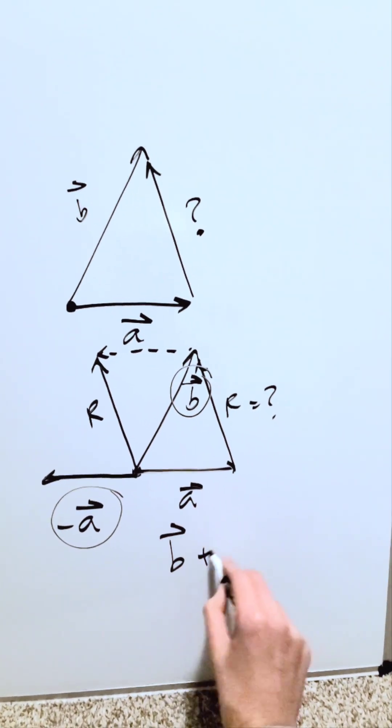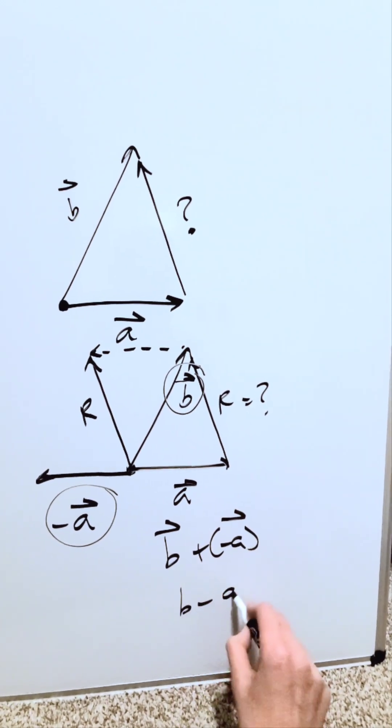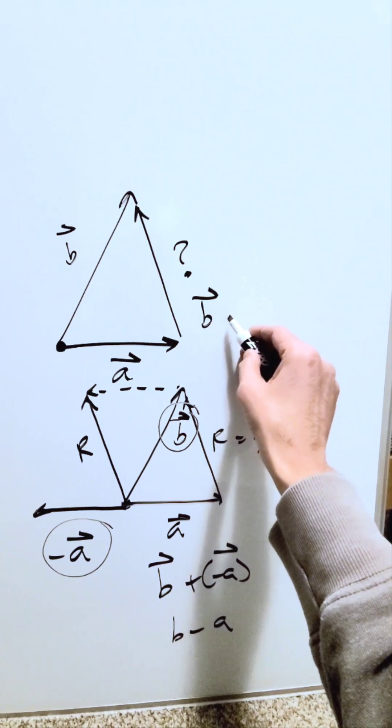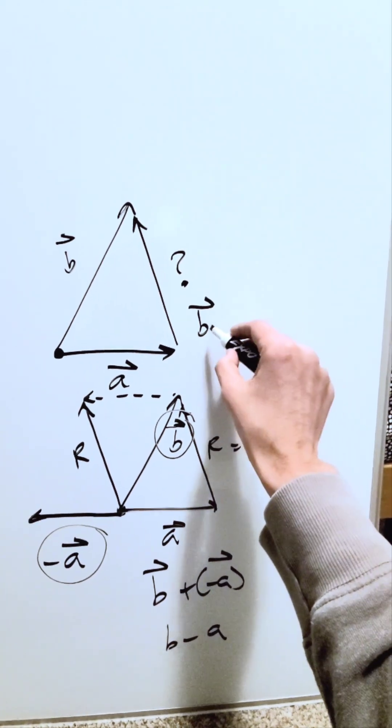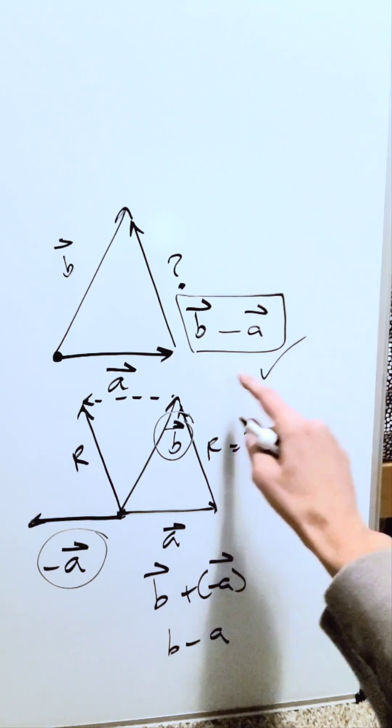It will be b plus minus a vector, or simply just say b minus a. I'll put it for you here. Remaining consistent with our representation and terminology, this answer here will be correct.